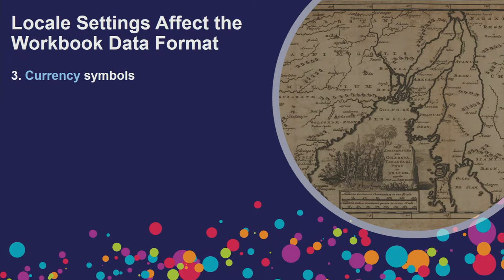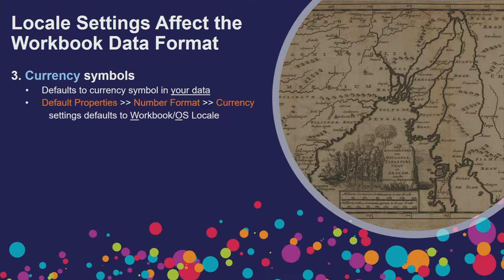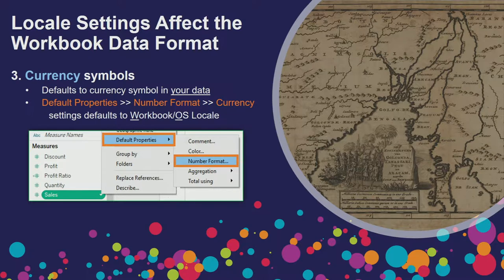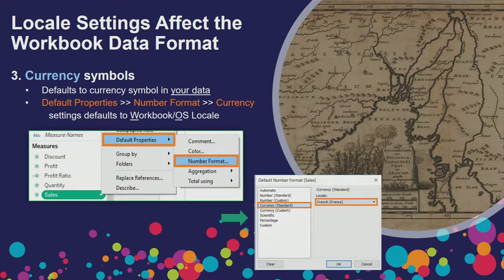Currency symbols are also impacted by locale settings. If your data already contains a currency field, we're not going to change it — we preserve what you have. But if you want to change the format of a number field to a currency, the default currency symbol will be whatever your locale is set to. You can go to a field under measures, select Default Properties, then Number Format, and if you select Currency Standard, you'll see a locale list where you can change the locale. For example, if you pick French France, euro becomes your currency symbol.